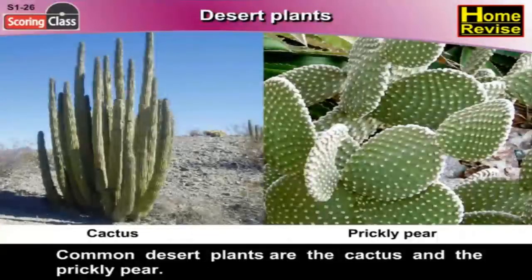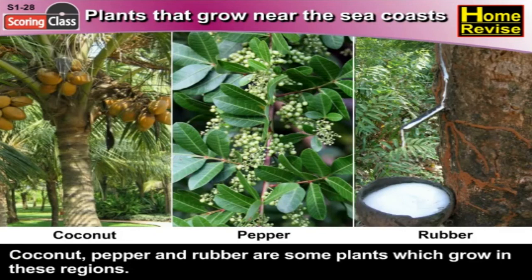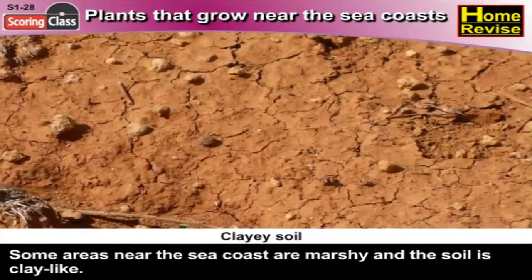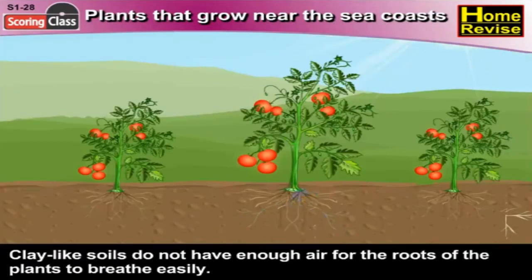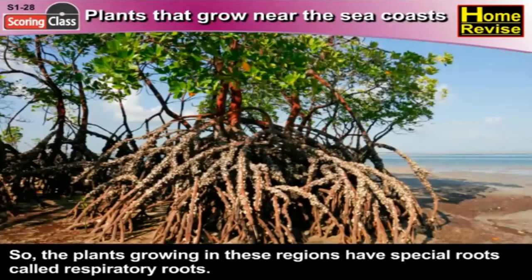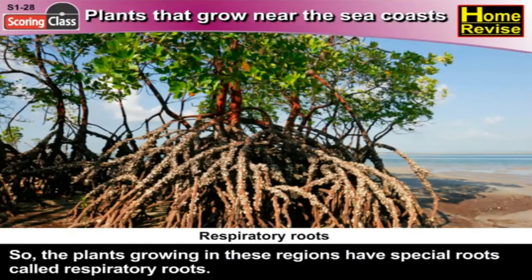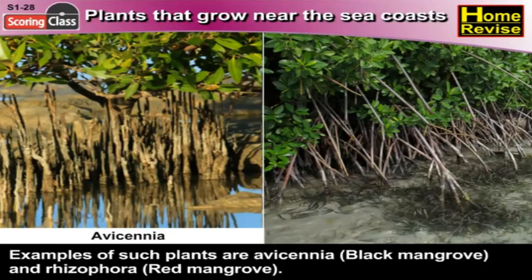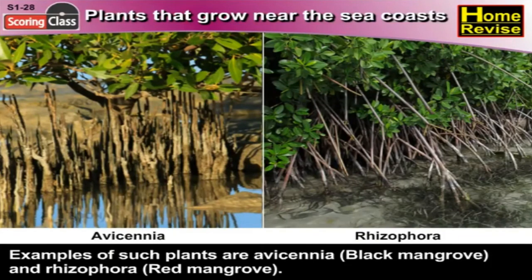Common desert plants are the cactus and the prickly pear. Plants that grow near the sea coasts — coconut, pepper, and rubber are some plants which grow in these regions. In some areas the soil is clay-like; such soils do not have enough air for the roots of plants to breathe easily. So the plants growing in these regions have special roots called respiratory roots. Examples of such plants are Avicennia (black mangrove) and Rhizophora (red mangrove).